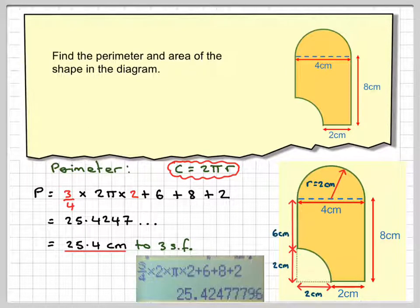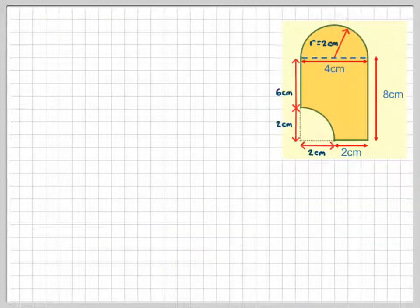So that's for the perimeter, that's the distance around the outside of the shape. Now we're going to look at the area of the shape, which is this one here. So we've got the same things marked on.